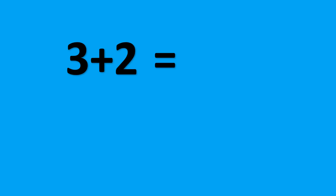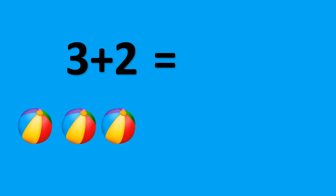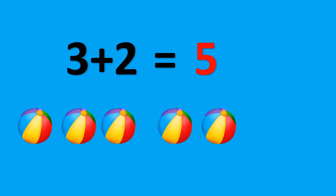3 plus 2. There are 3 balls. Let's add 2 balls. Now we have 3 balls plus 2 more balls. This equals 5 balls. So, 3 plus 2 equals 5.